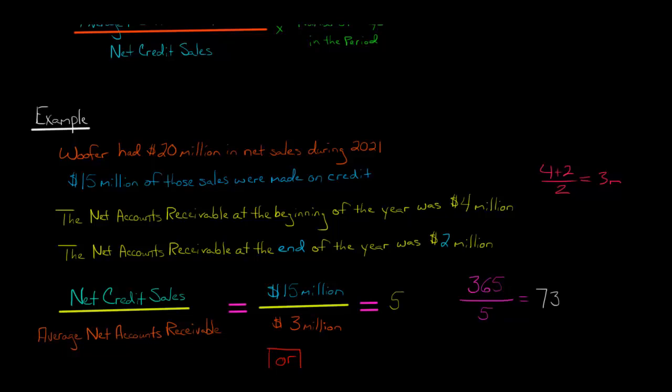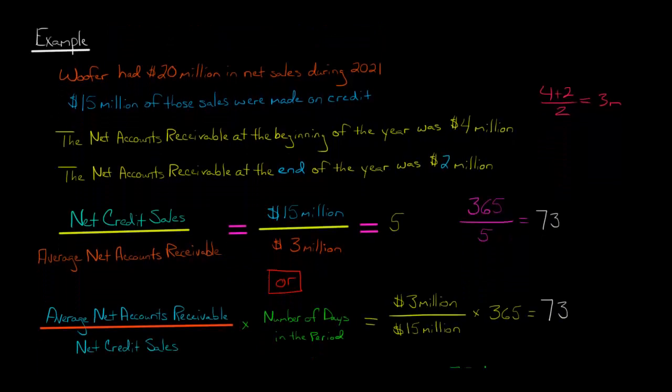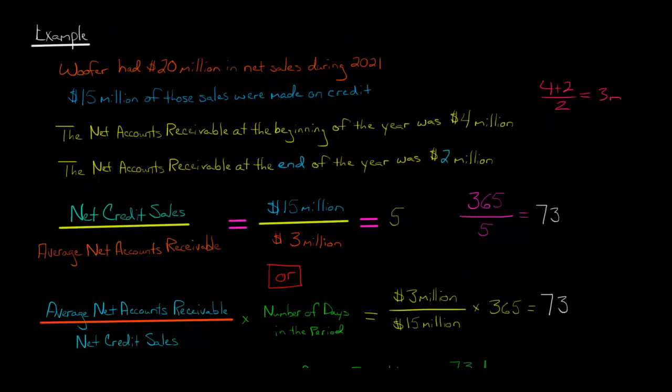Let me show you the other way to do it. If you didn't already know the accounts receivable turnover ratio, you could just take the average net accounts receivable, which we calculated was $3 million, and divide that by net credit sales, which was $15 million, then multiply that by the number of days in the period. Because we're talking about annual, it's 365. So we've got $3 million divided by $15 million, that's 0.2, and then multiply it by 365, that also gives us 73. So even if you don't know the accounts receivable turnover ratio, you can calculate it in this manner directly, and you're going to get to the same answer either way.